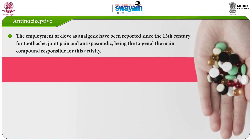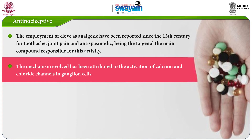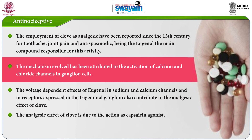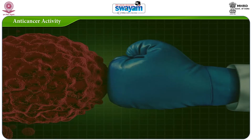The next property is the antinociceptive property. The use of clove as an analgesic has been reported since the 13th century for toothache, joint pain, and antispasmodic effects, with eugenol being the main compound responsible for this activity. The mechanism has been attributed to the activation of calcium and chloride channels in ganglion cells. The voltage-dependent effects of eugenol on sodium and calcium channels and receptors expressed in the trigeminal ganglion also contribute to the analgesic effect of clove, which also acts as a capsaicin agonist.